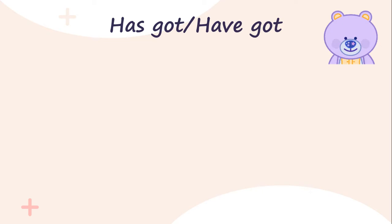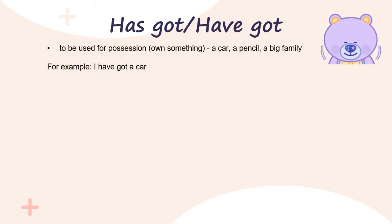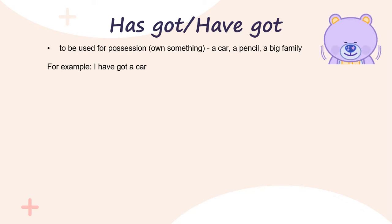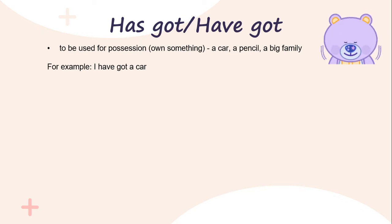When do we use 'has got' and 'have got'? We will use 'has got' or 'have got' to possess something — it means you own something. When you own something, you will use 'has got' or 'have got'. For example: a car, a pencil, a big family.